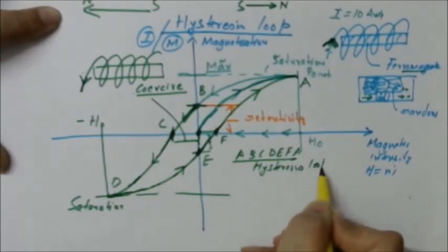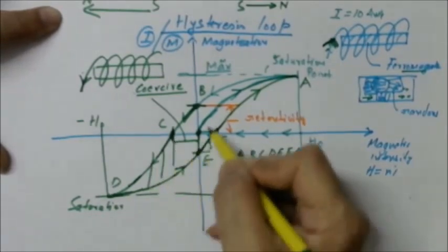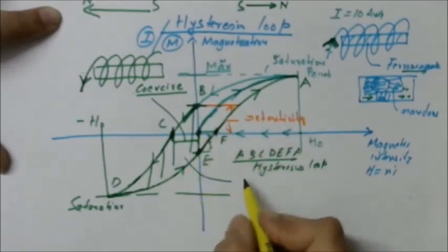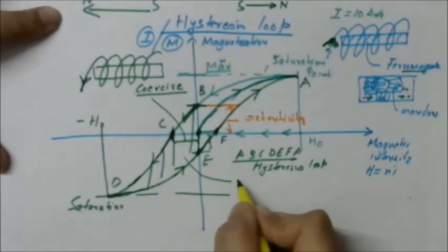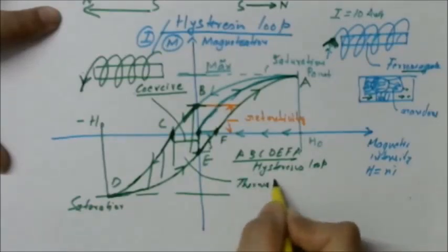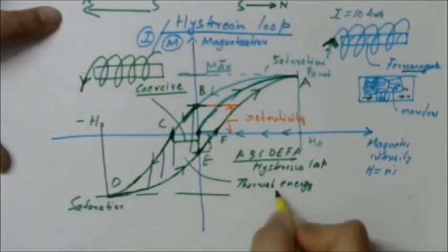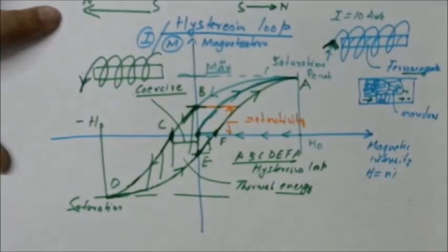The area of the hysteresis loop represents thermal energy — the energy wasted in the process of magnetization and demagnetization is the thermal energy. I hope you found this useful.